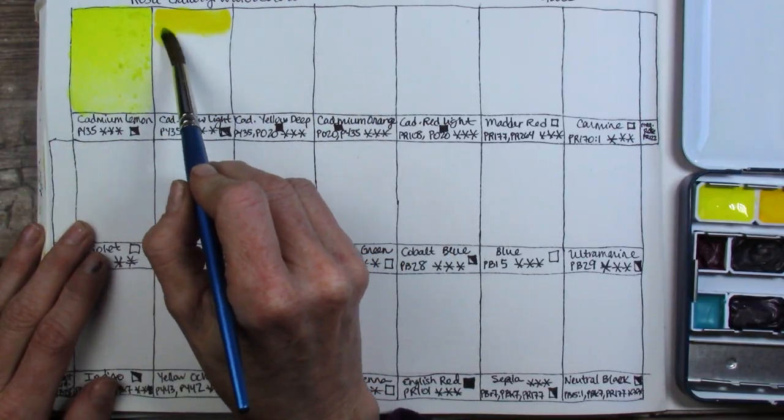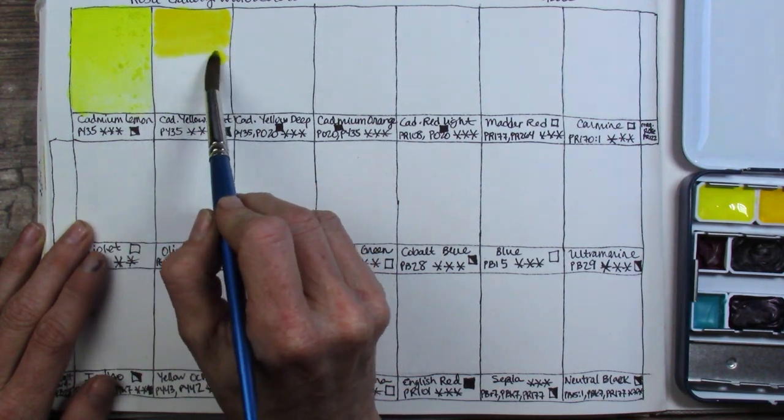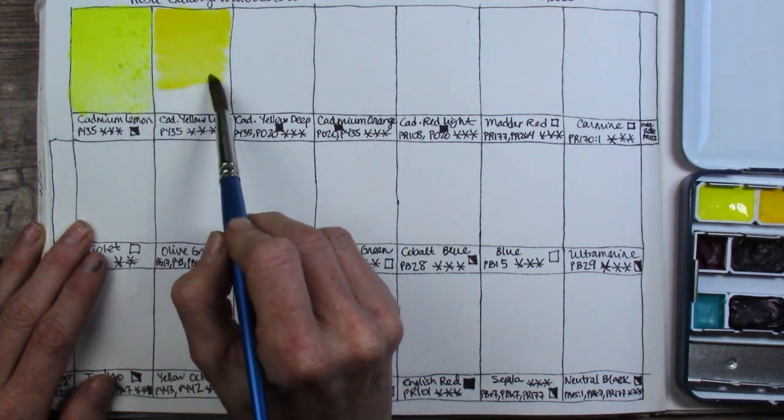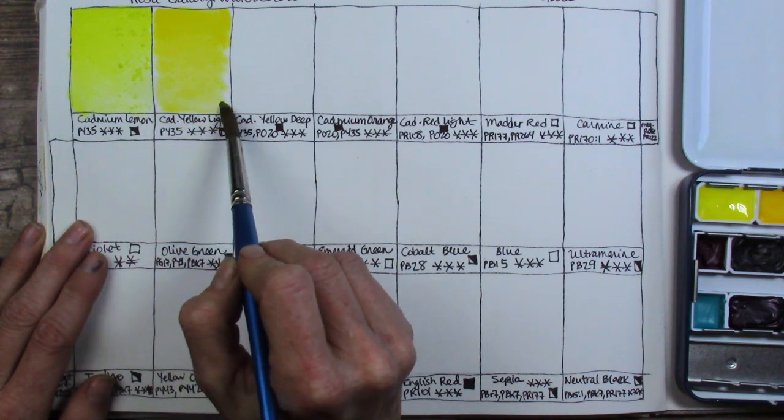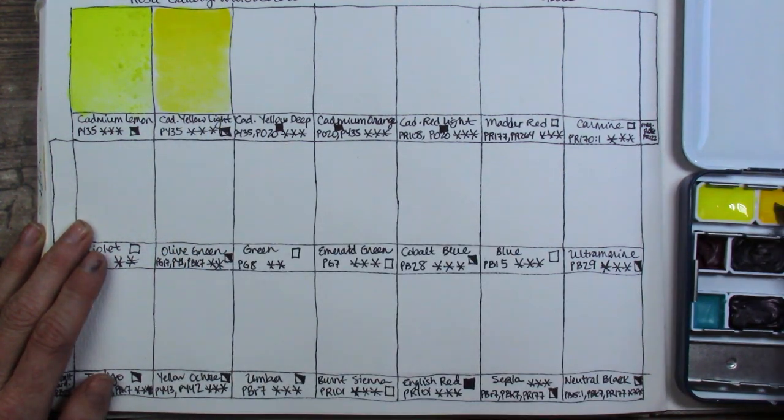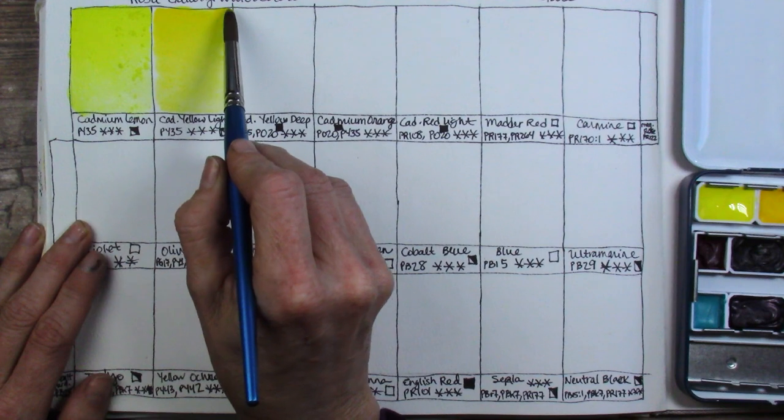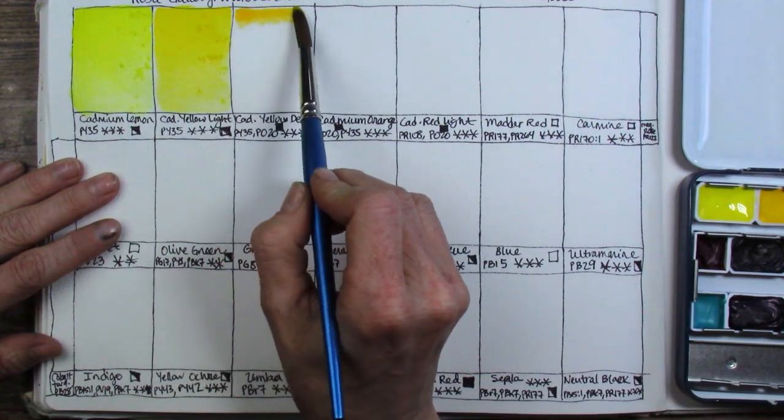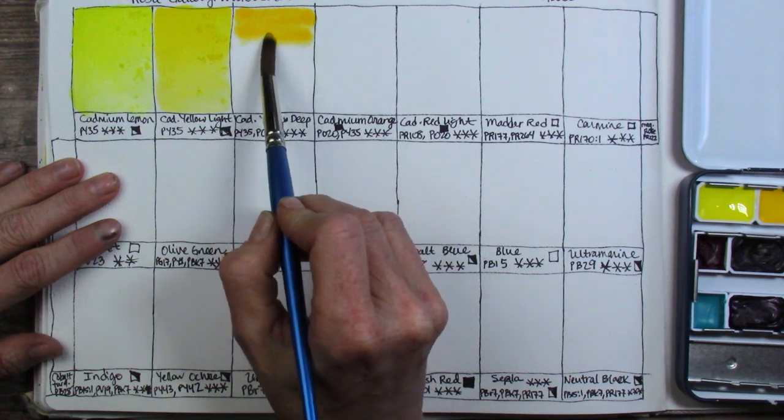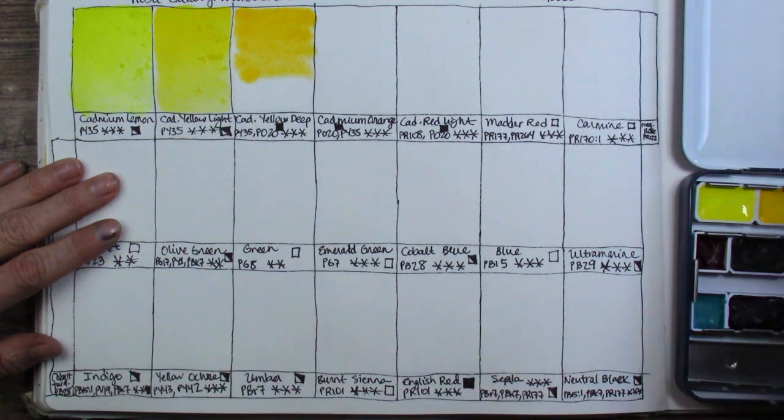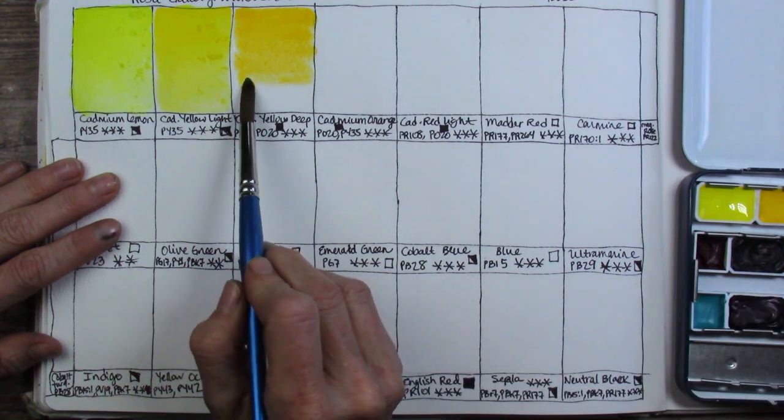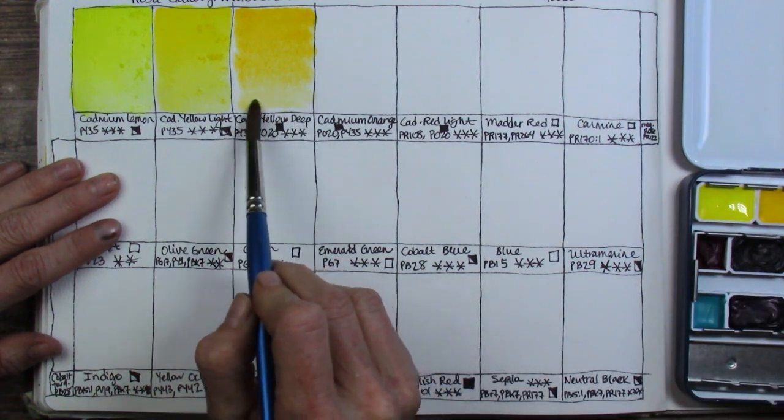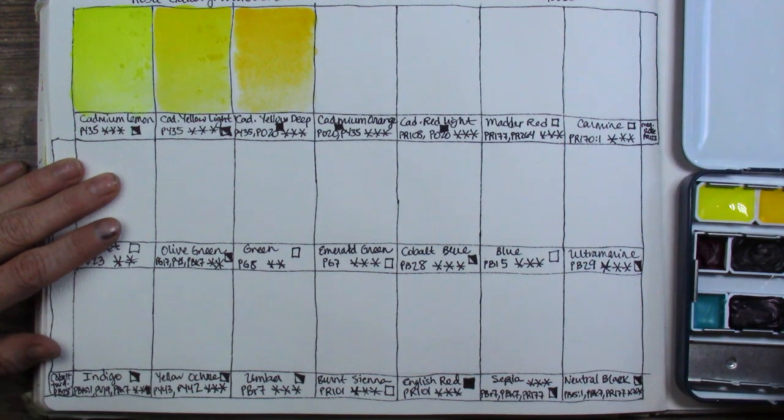Next we have the cadmium yellow light, slightly warmer yellow. Very nice. Still a PY35. Three star lightfast rating which is their highest rating by the way. Another semi-opaque on that symbol simply because I did find the yellows to be somewhat opaque. Next is cadmium yellow deep, beautiful golden yellow PY35 PO20. It's opaque and three star lightfast. That one's a very pretty color.